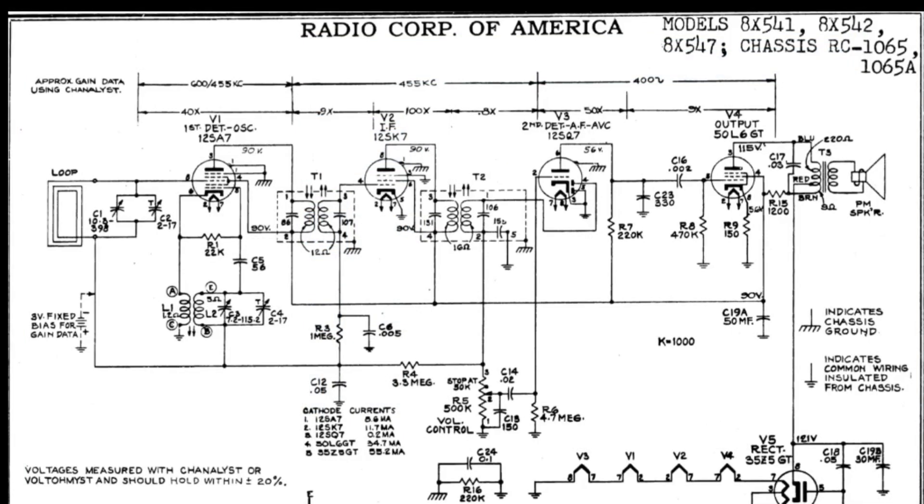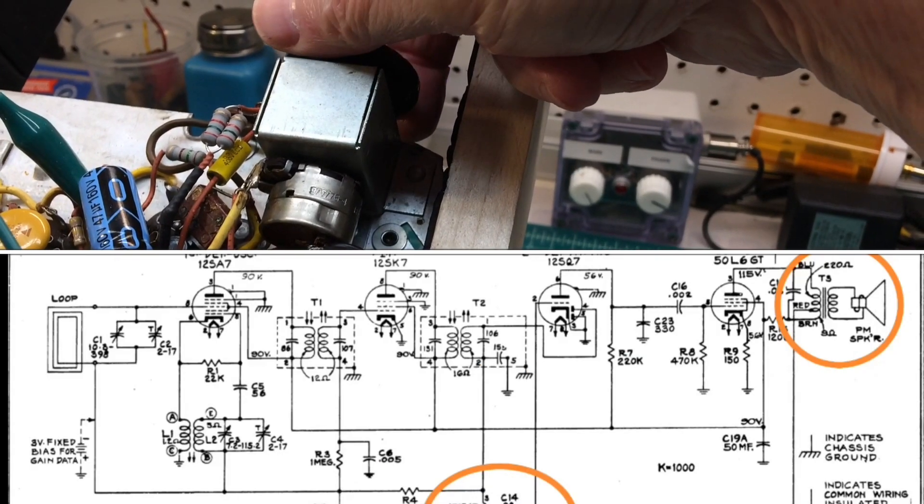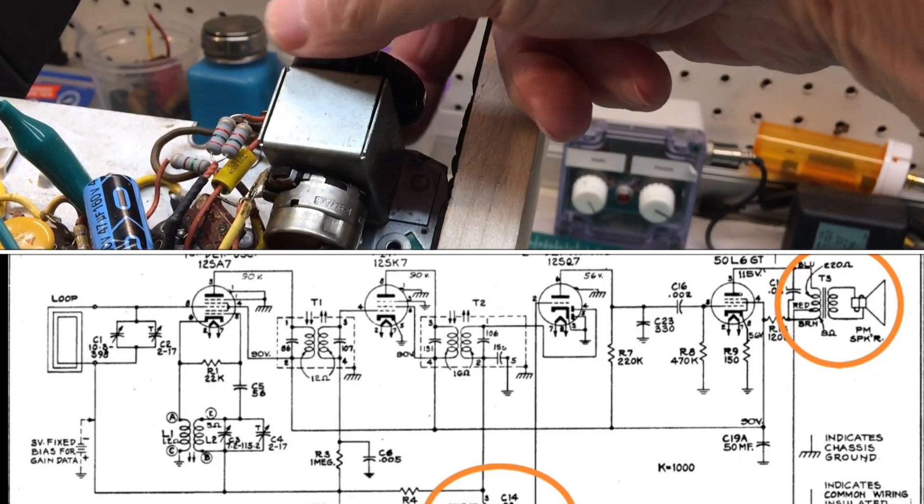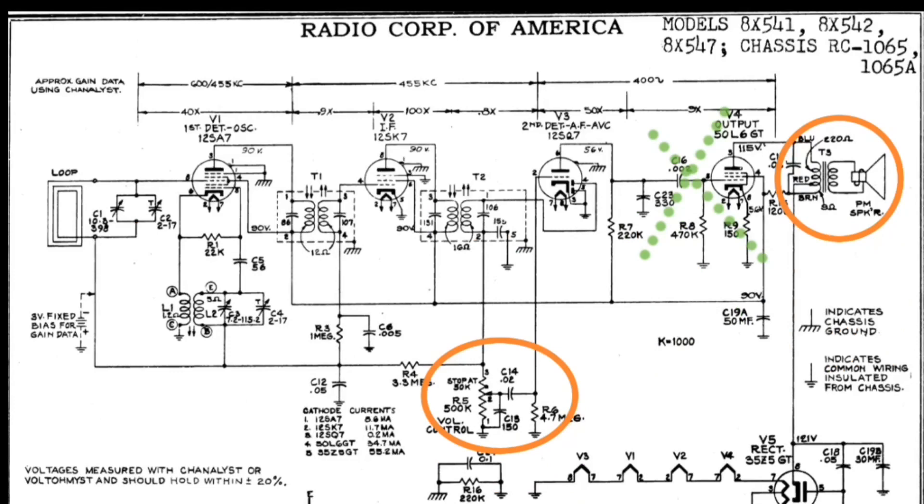Let's get the signal tracer out here and do some signal tracing. We already know that the noise itself is coming from the loudspeaker. You guys saw where I can turn the volume control up and down, and when I lowered the volume, we do not hear the issue. So that tells me the problem is not in the circuit between the 12SQ7 and the 50L6. We're bringing the signal in on the high side of the volume control right here as indicated in green.